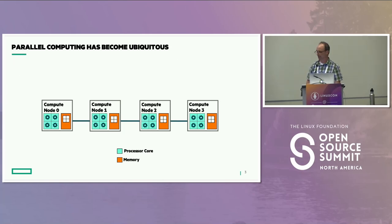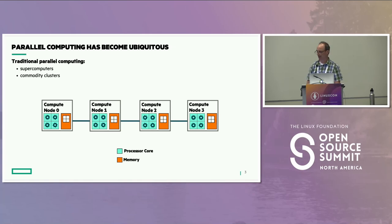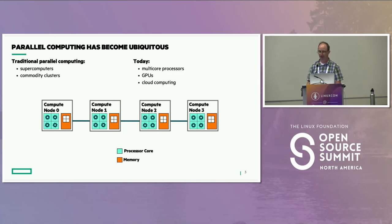Parallel computing has become ubiquitous over the last decade or two. When I was in school, if you were doing parallel computing, you would either need access to a supercomputer, apply for time at a computing center, or build your own commodity cluster. Today the landscape is very different — you can't really buy a computer without a multi-core processor, most have GPUs, and cloud providers are happy to sell you large resources for a reasonable fee.